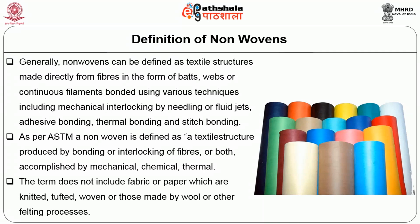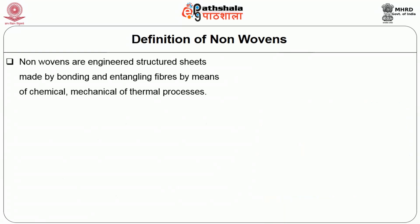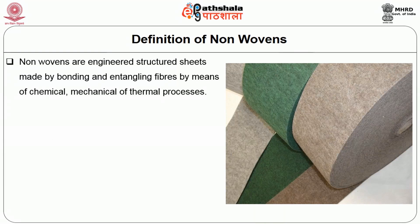The term does not include fabric or paper which are knitted, tufted, woven, or those made by wool or other felting process. Nonwovens are engineered structure sheets made by bonding and entangling fibers by means of chemical, mechanical, or thermal process.